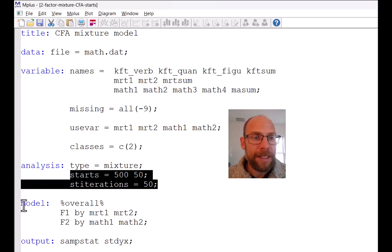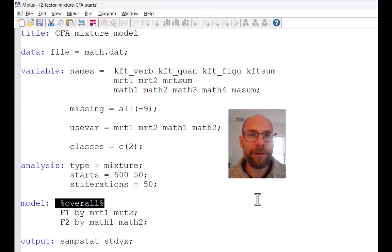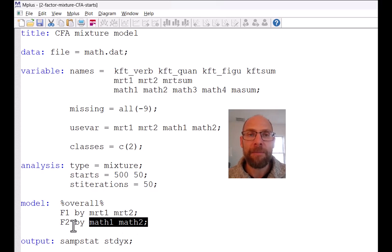In the model statement you can see that this looks like a regular confirmatory factor analysis. The only difference here is that I also included a statement that says overall in percentage signs, and so this overall command tells Mplus that the factor model as such is the same in both latent classes. So for both latent classes we assume that there are two factors, and so overall so to say the same model holds in both classes where the MRT1 and MRT2 indicators measure factor 1, and the math1 and math2 indicators measure factor F2.